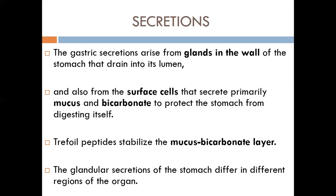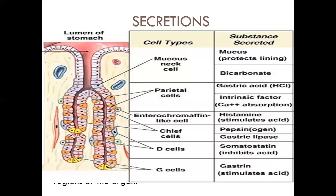In the lumen of the stomach, the pH is 1.5 to 3, but at the surface of the mucosal epithelial cells the pH is around 7 — almost neutral — because the mucus and bicarbonate layer neutralizes the acid. The glandular secretions of the stomach differ in different regions. The gastric pits contain different types of cells responsible for these secretions.